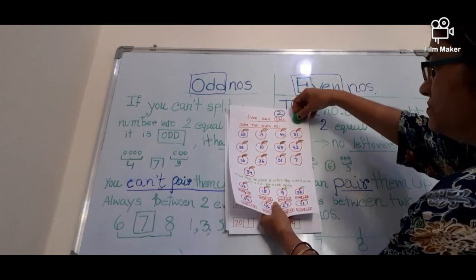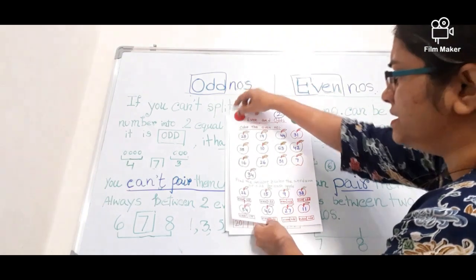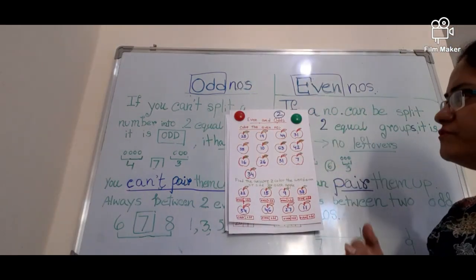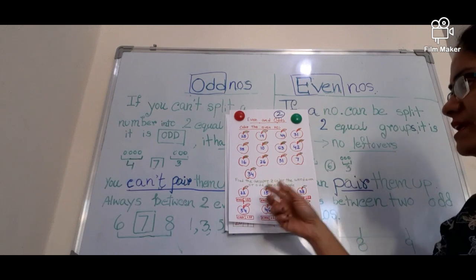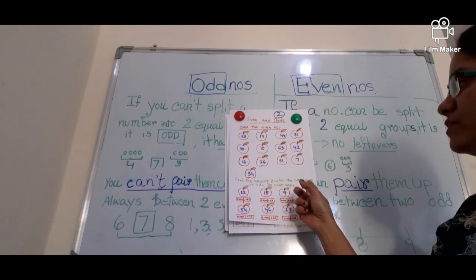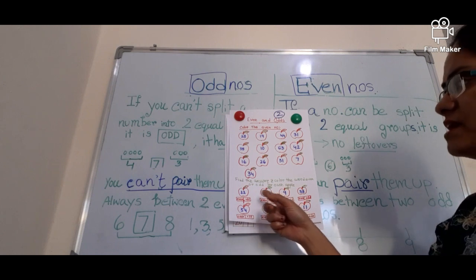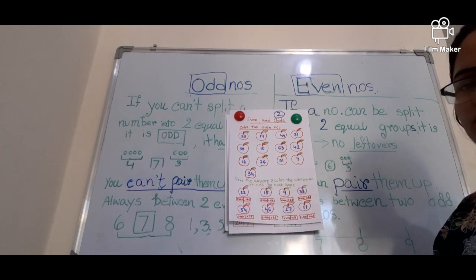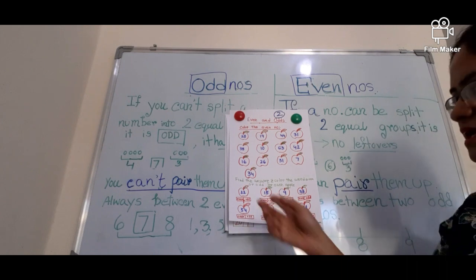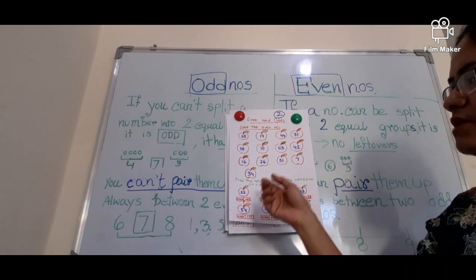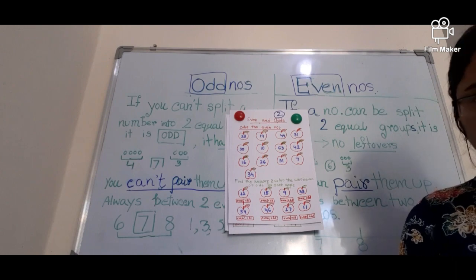The second type of worksheet: I have drawn some apples. You have to find the even number and color the even number apple. Find the answer and color the word 'even' or 'odd' for each apple. For example, 22 — is 22 even or odd? 22 is an even number, so you color the word 'even.'